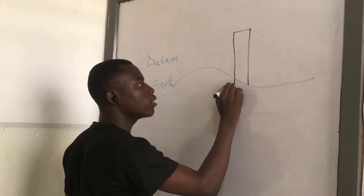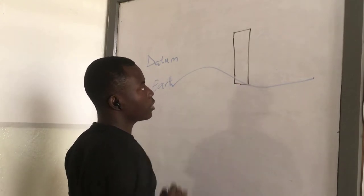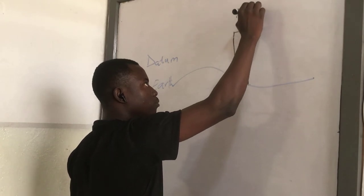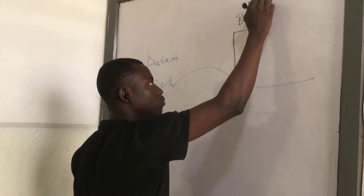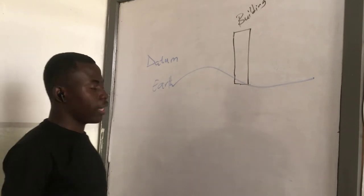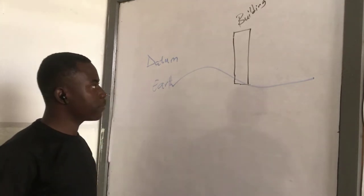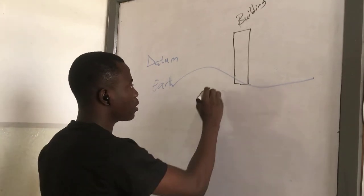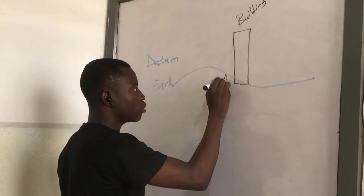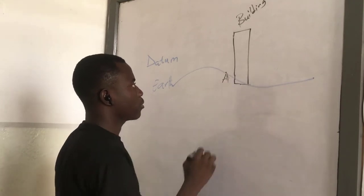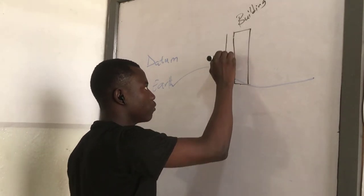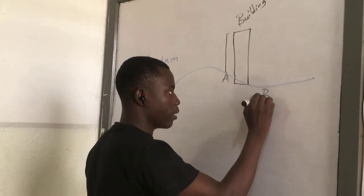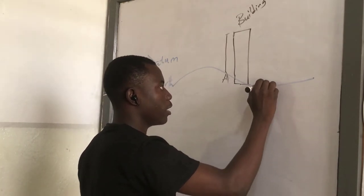So this building, and I asked two people to measure the height of this building. Let's say student A stood from this point and measured the height of the building, and student B stood from here and then measured the height of the building.